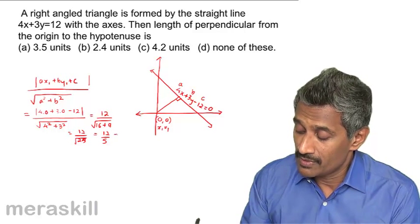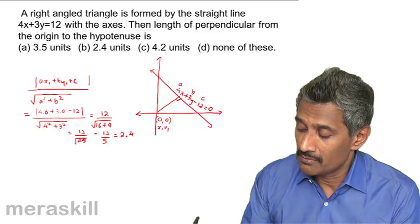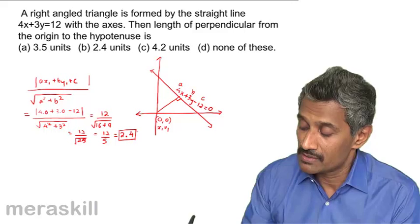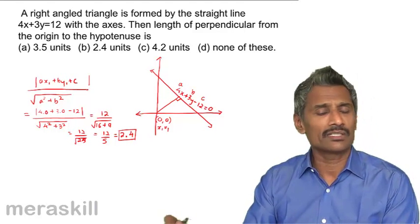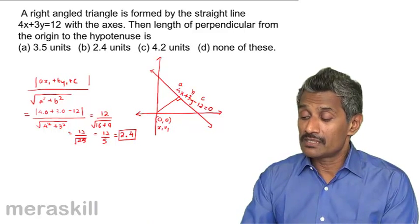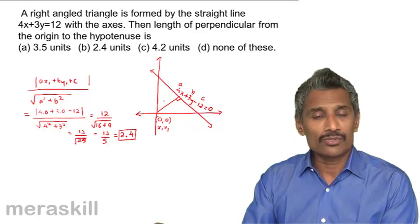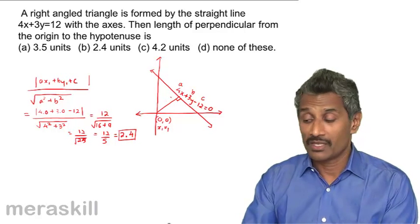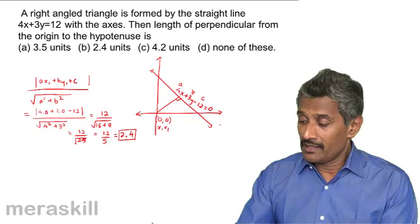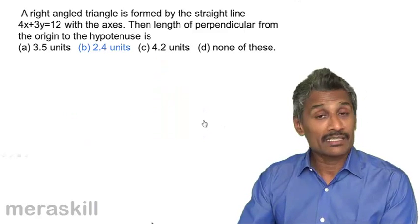Which is 2.4. So the distance of this line from the origin is 2.4 units, using the concept of distance between a line and a point. In such cases, always draw a rough diagram—you'll get a graphical representation and things will become easier. And yes, it tallies with option B, 2.4 units.